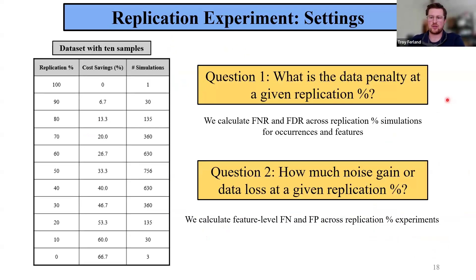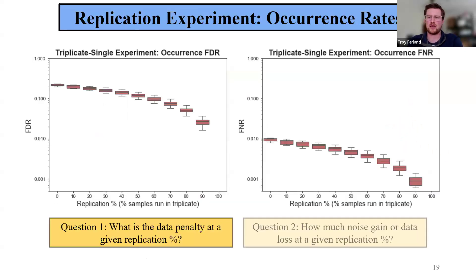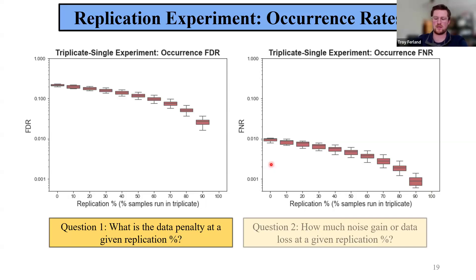To provide contextual questions for our simulation experiment, we obviously want to know what our data penalties are at a given replication percent, looking at false negative and discovery metrics. More concretely: how many features do we gain or lose at a given scenario? Looking first at the occurrence level, our data shows increases in both loss and gain with decreased replication. In all these plots, full triplicate analysis is on the far right and single replication on the far left — false discovery on the left and false negative on the right. As we move from right to left, data penalties increase.